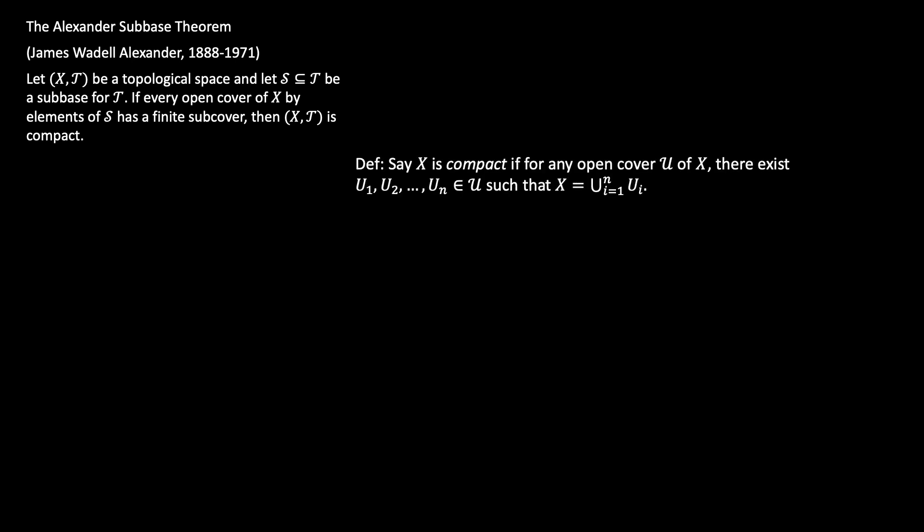The next definition we'll need is what it means to say a topological space is compact. That means for any open cover U of X, there exist finitely many of the U's — U1 through UN — such that X can be covered by them. So X is compact when any open cover of X has a finite subcover. You don't need all the elements from the open cover; you just need a finite handful, and you should be able to do that for every open cover.